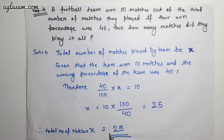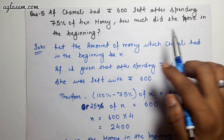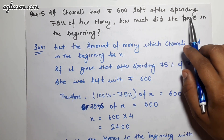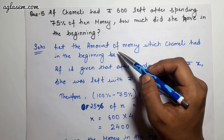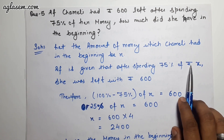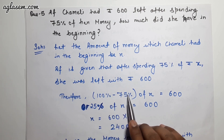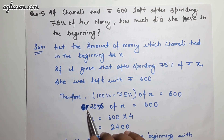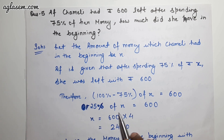Question 5: Chameli had rupees 600 left after spending 75% of her money. How much did she have in the beginning? Let the initial amount be x. After spending 75%, she is left with 25% of x = 600. So x = 600 × 4 = 2400. Chameli had rupees 2400 in the beginning.